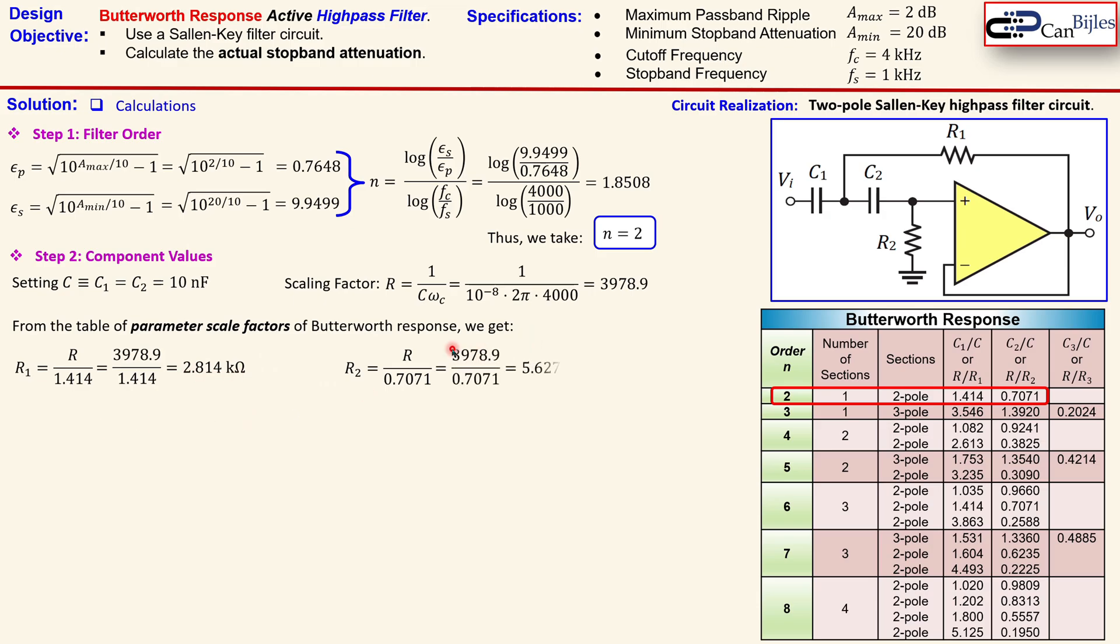Now we can use this scaling factor R in here and divide by this parameter from the table, and that will give us approximately 2.8 kΩ. For the R2 we get the similar situation, so again the scaling factor over 0.7071 from the table, and that will result in 5.6 kΩ approximately. So we have now our resistor values calculated from the selected capacitor of 10 nanofarad and also using the parameters from the table.